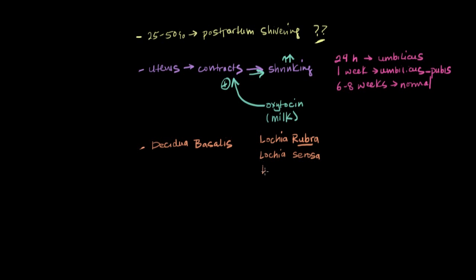And ultimately, that vaginal discharge turns more yellow, yellow-white color. And then it's referred to as lochia alba. Lochia alba, with alba meaning white. So you can see that vaginal discharge, a significant amount of vaginal discharge, lasts for about a month following delivery.